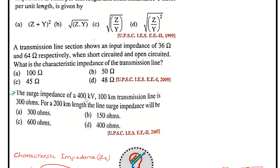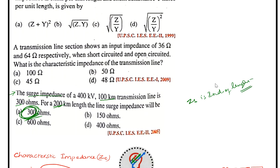Question 1: The surge impedance of a 400 kV, 100 km transmission line is 300 ohms. For a 200 km length, the surge impedance will be? Since surge impedance is independent of the length of the line, it remains 300 ohms for 200 km as well. Answer: 300 ohms.